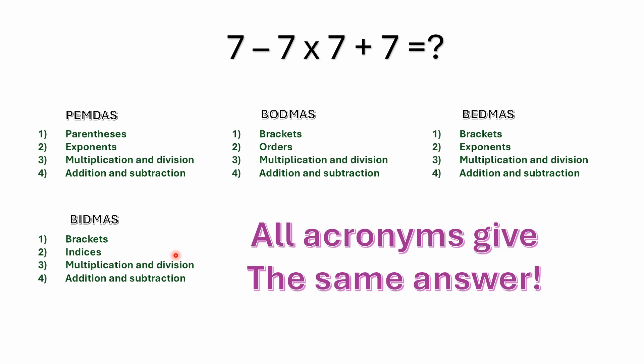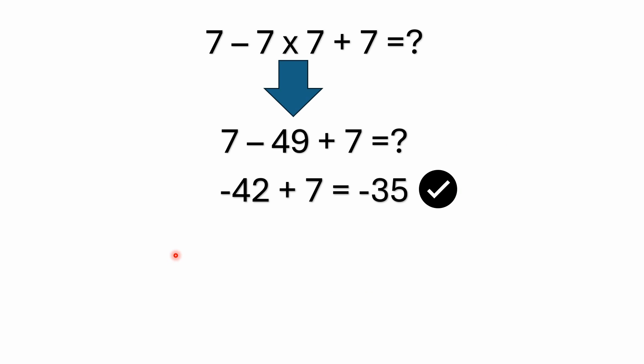Number four: your addition and subtraction. Again, addition and subtraction have equal precedence — it's not addition before subtraction, they're equal. But back to the problem at hand: it's seven minus seven times seven plus seven.